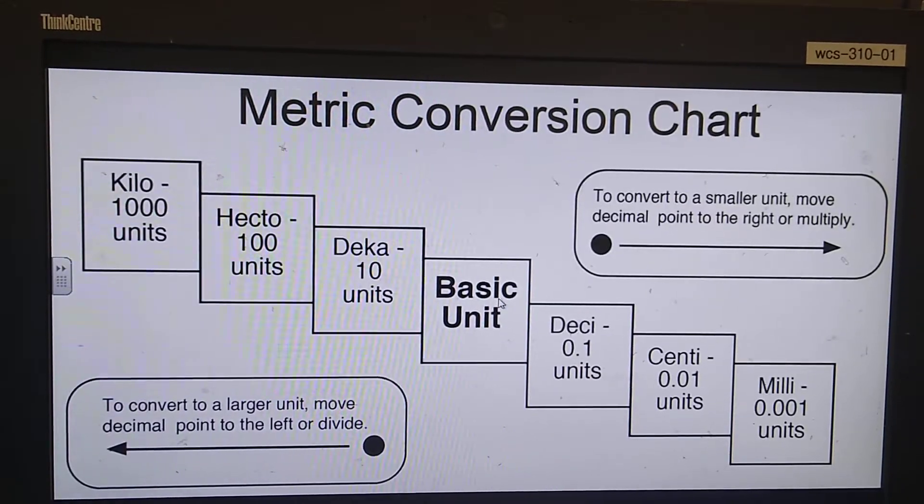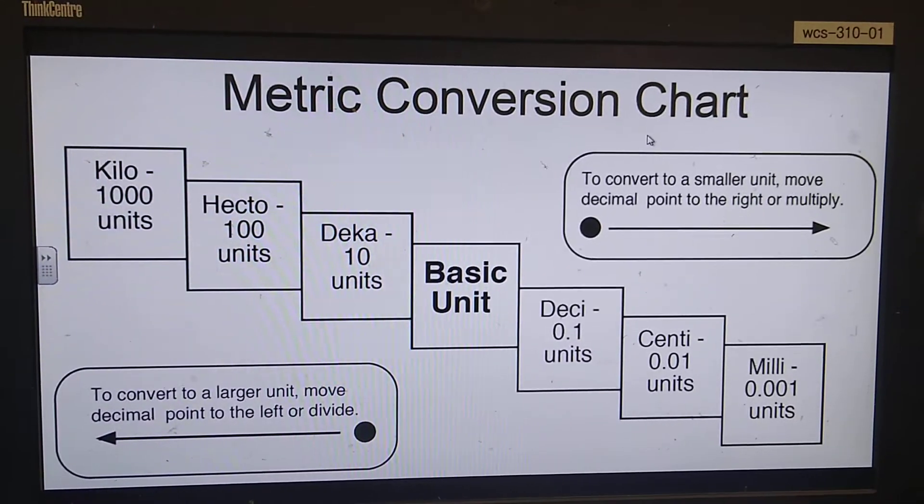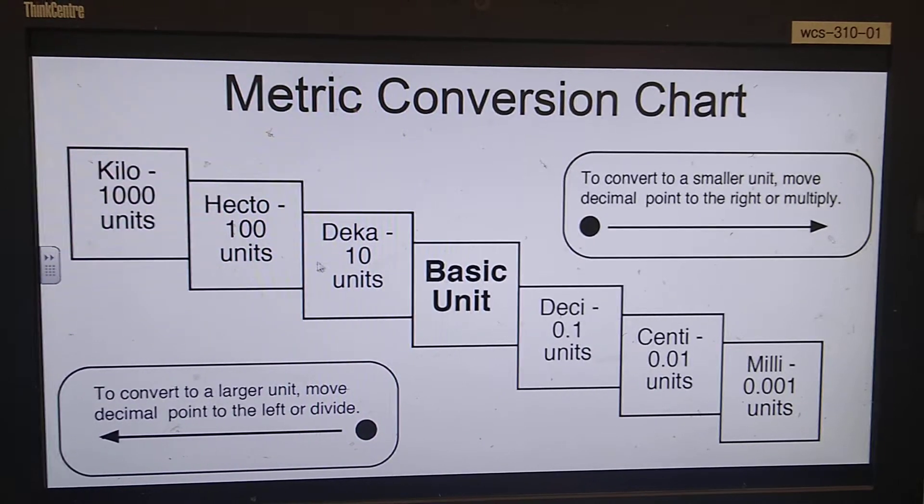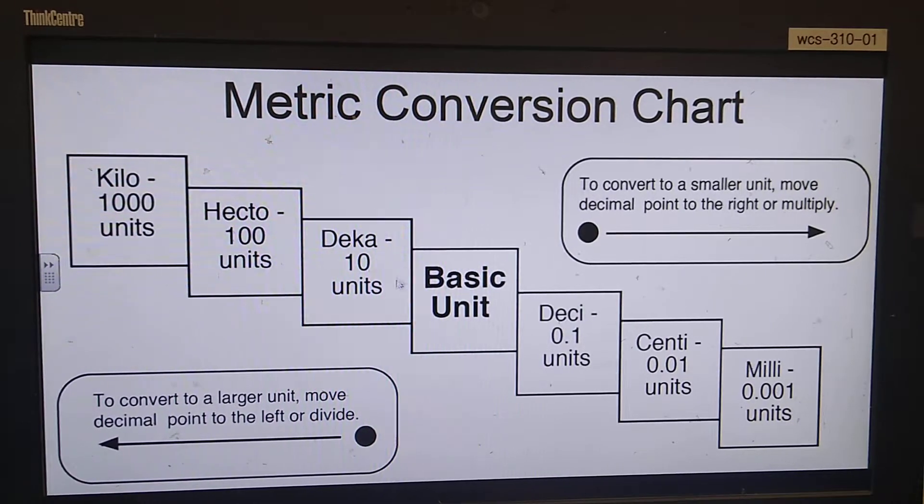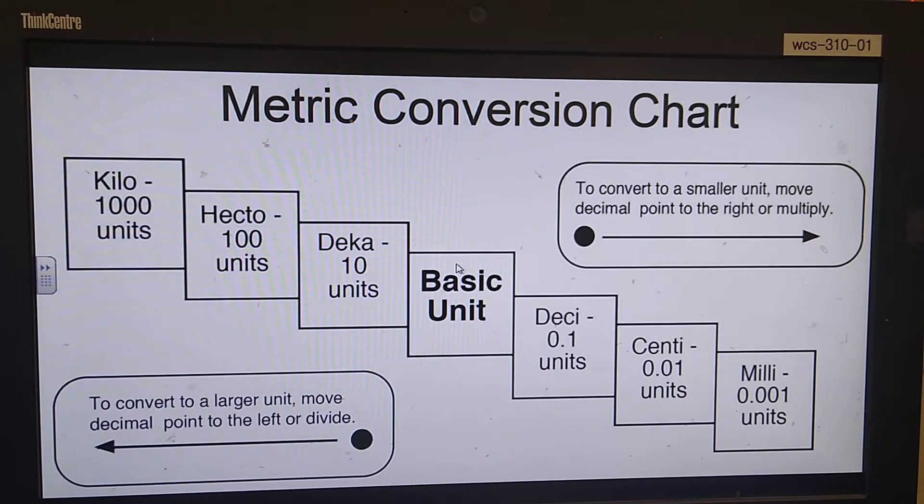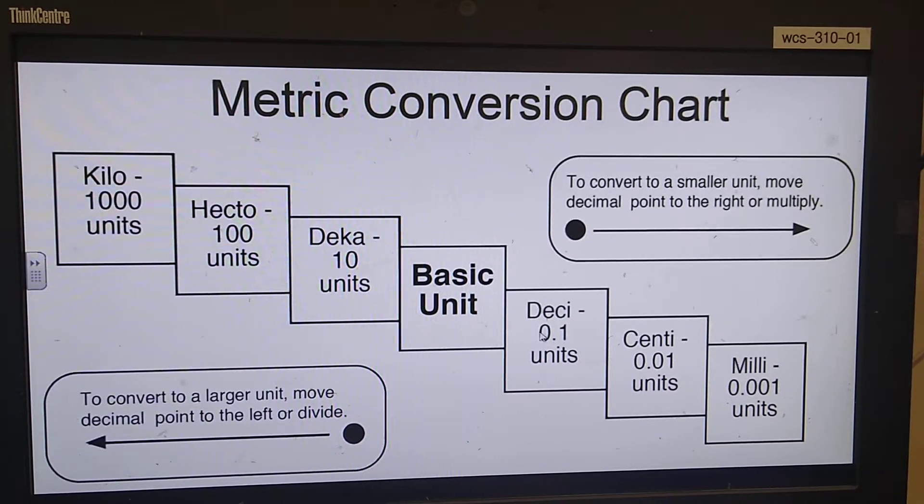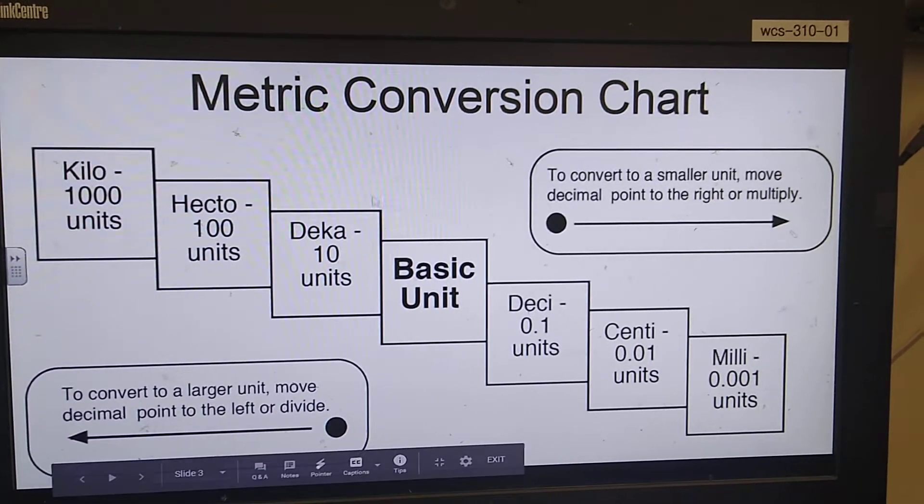So we're going to see that this is much faster and easier using a metric conversion chart. It's going to be kilo, hecto, deca, the base units right here. The three main base units we're going to use in our class are liters, meters, and grams. Then you have desi, centi, and milli.